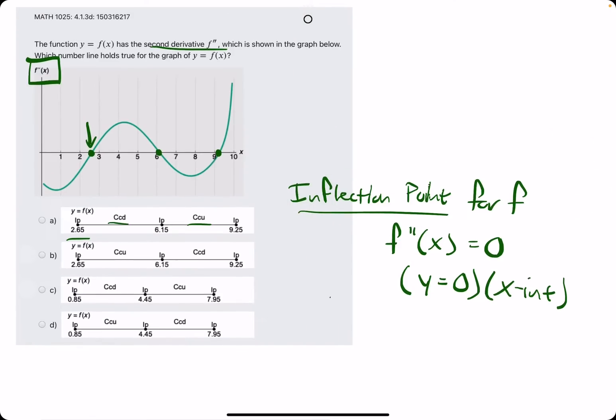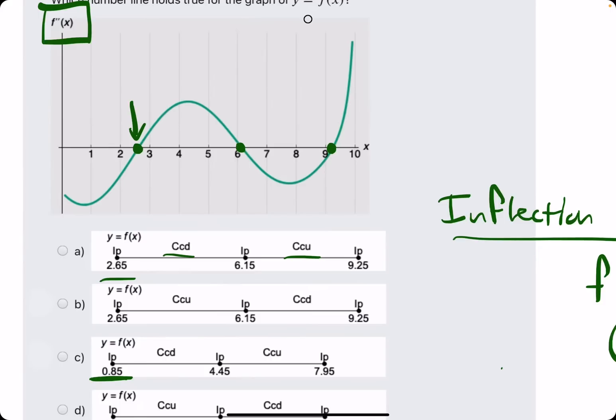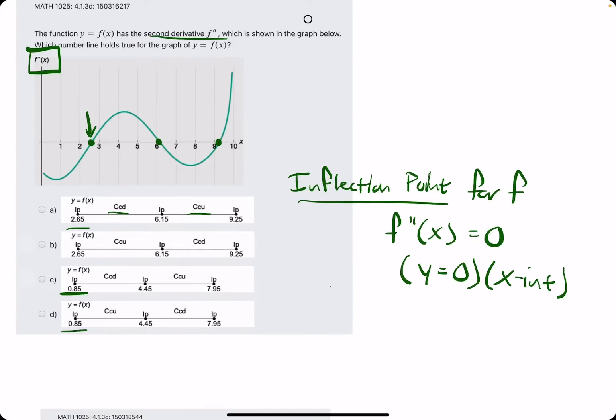Before I get ahead of myself, let's eliminate some options here. The number lines with 0.85 are incorrect because 0.85 is not an x-intercept of our curve.